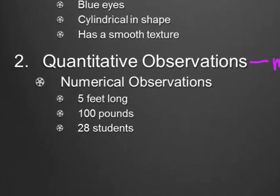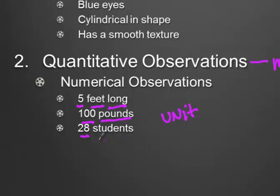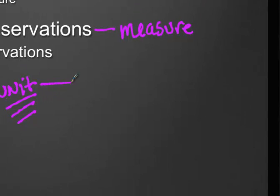When we make these numerical observations, two things we always want to have: a quantity — a number like 5, 100, or 28 — and also the unit that goes along with it. Each of these units describes how much of a particular property I have. When I see something is 5 feet long, feet tells me I'm talking about length. Pounds tells me I'm talking about weight. You want to make sure that in any measurement you include the units, because it's those units that express the property of that object, whether it's a physical or chemical property.